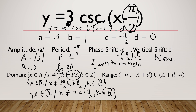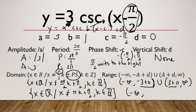For range, we substitute the value of the amplitude and the value of d. It will be negative infinity to negative 3 plus 0, union 3 plus 0 to positive infinity. Simplifying, the range is negative infinity to negative 3, union 3 to positive infinity.